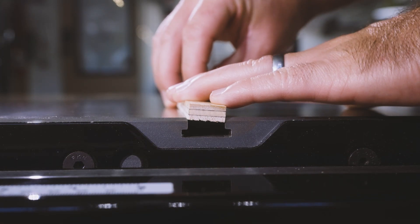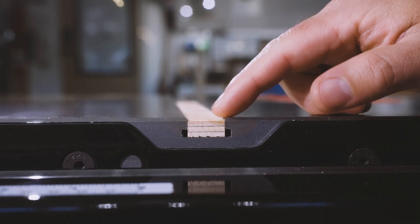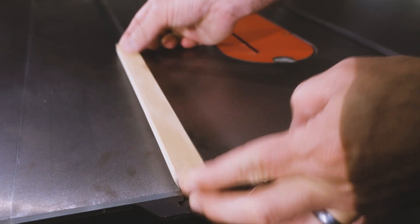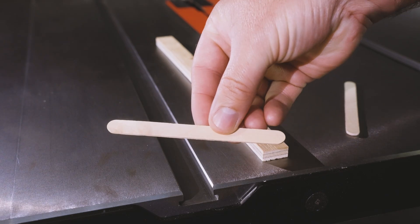For this next step, we need our runners to sit in the miter slot flush with the top of the table. But they're a little bit shallow, so I'm going to use these popsicle sticks as shims.